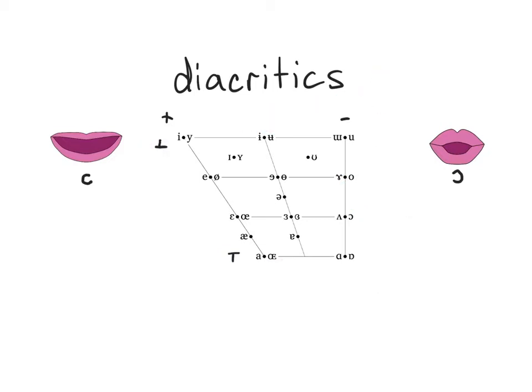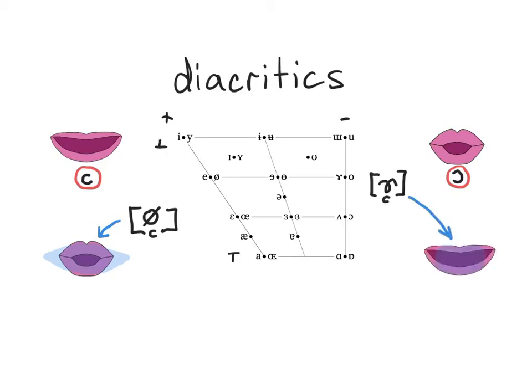The third pair of diacritics deal with lip configuration. These diacritics can be used on a base symbol to show that what would normally be a truly round vowel actually has less rounding and is closer to spread, or vice versa.